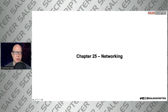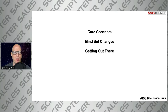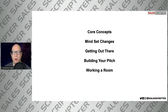Today we're going to talk about chapter 25 in the smart sales system, which is on business networking — using networking to generate more leads. We'll go back to some core concepts and talk about how those apply to business networking: how to change your mindset to get the most out of networking, how to build the best pitch, and how to build better and more productive relationships.